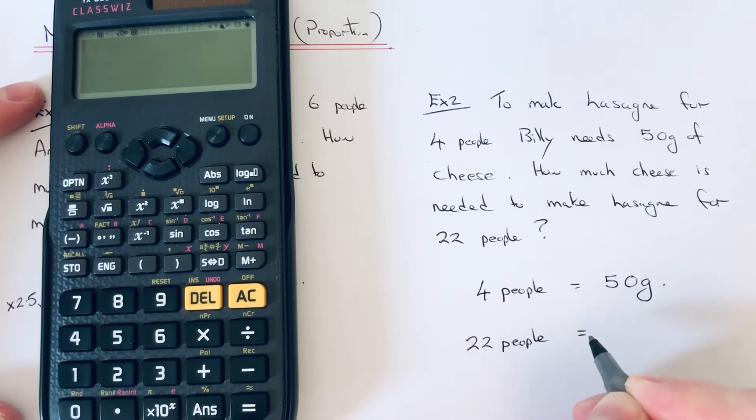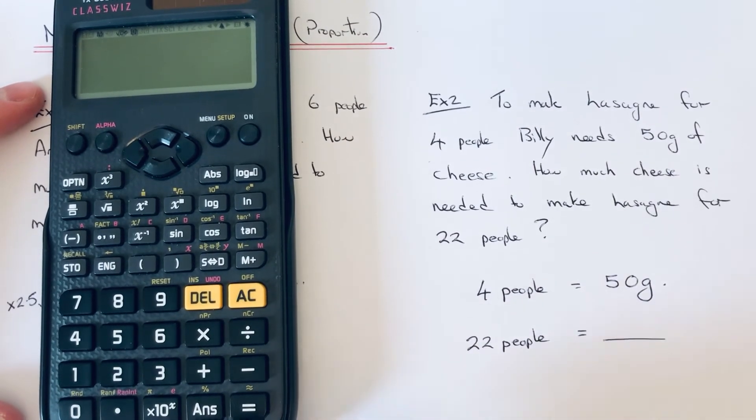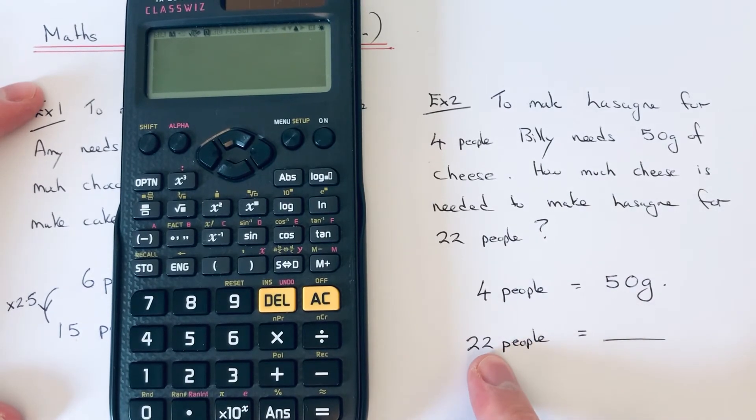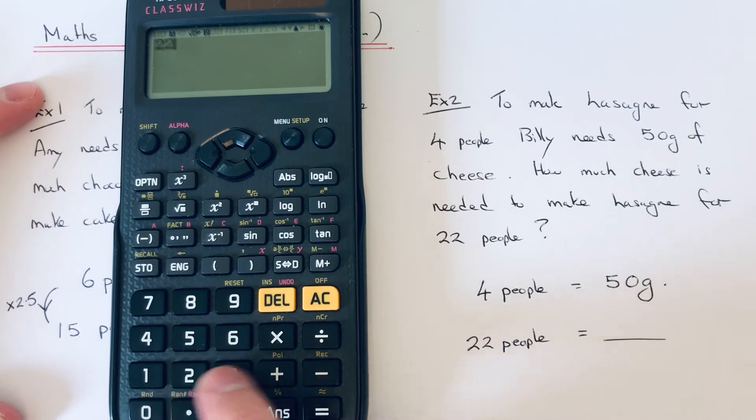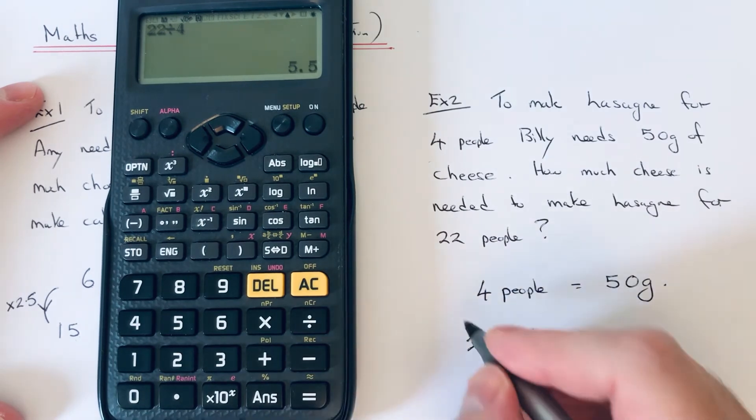The 22 underneath the 4, and then we just need to figure out this side here. So if we just work out how many times bigger 22 is than 4, you do that by doing 22 divided by 4. So it's 5.5 times bigger.